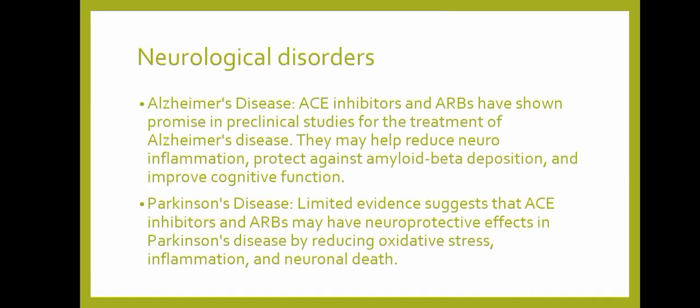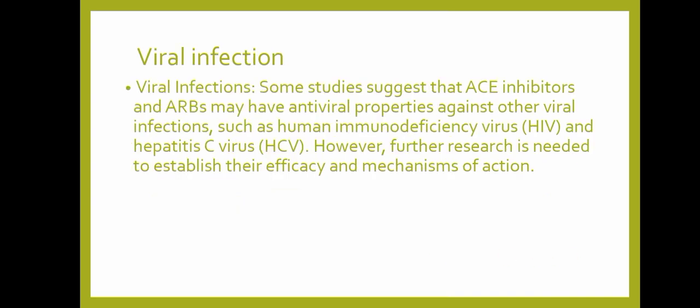Neurological disorders: ACE inhibitors and ARBs have shown promise in preclinical studies for the treatment of Alzheimer's disease. They may help to reduce neuroinflammation, protect against amyloid beta deposition, and improve cognitive function. Limited evidence also suggests neuroprotective effects in Parkinson's disease by reducing oxidative stress, inflammation, and neuronal death. Regarding viral infections, some studies suggest ACE inhibitors and ARBs may have antiviral properties against HIV and Hepatitis C virus, though further research is needed.